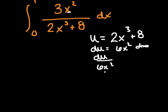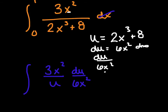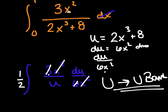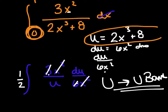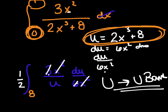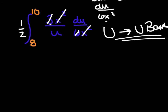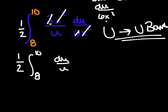Rewriting: 3x squared over u times du over (6x squared). The x squared terms cancel and 3/6 simplifies to 1/2. Now, since we used u-substitution on a definite integral, we must convert the bounds to u-bounds. Plug x = 0 into u = 2x³ + 8: lower bound is 8. Plug x = 1: upper bound is 10. So we have (1/2) integral from 8 to 10 of du over u.